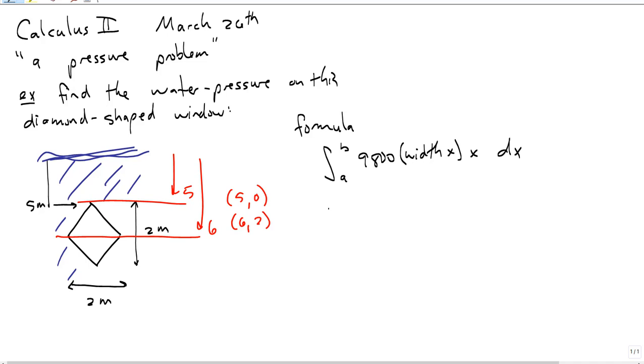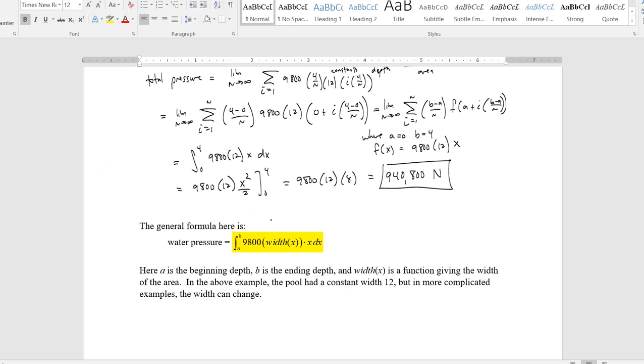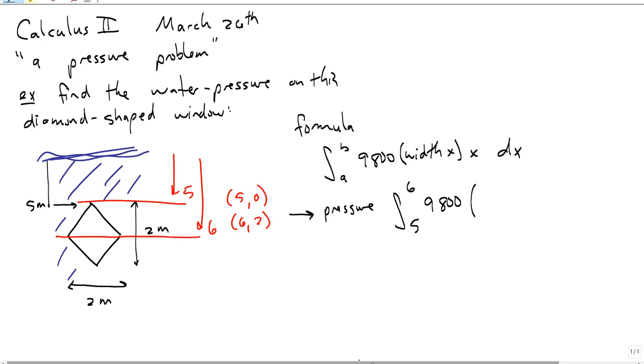So this part, the pressure, is going to be the integral from 5 to 6 of 9,800 times the width. You have to use the straight line formula for the width. It shouldn't be too hard. The slope is 2, so it's 2x. But if you plug in 5, it should be 0, so it's 2x minus 10, times x dx.